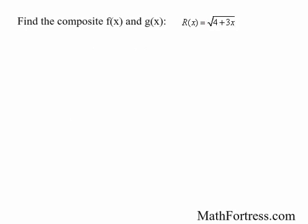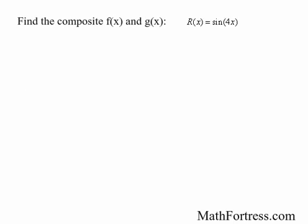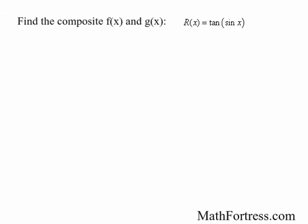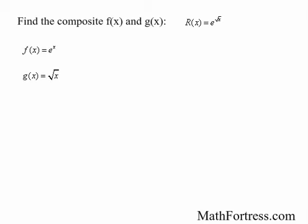How about the function r of x equals the square root of the quantity 4 plus 3x? The outer function is the square root of x and the inner function is the quantity 4 plus 3x. How about r of x equals sine of 4x? The outer function is sine of x and the inner function is 4x. How about r of x equals tangent of sine of x? The outer function is tangent of x and the inner function is sine of x. Let's try r of x equals e to the power of the square root of x. The outer function is e to the x and the inner function is the square root of x.